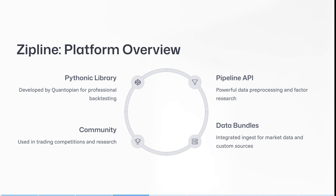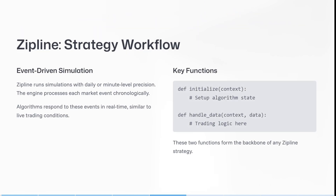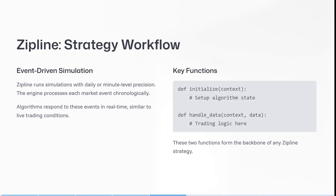Now let's have a look at ZipLine. ZipLine was developed by Quantopian for professional backtesting. It's used in trading competitions and research, and it's a powerful data pre-processing and factor research tool with integrated ingest for market data as well as custom sources. ZipLine runs simulations with daily or even minute-level precision. The engine processes each market event chronologically, and algorithms respond to these events in real time, similar to live trading conditions.